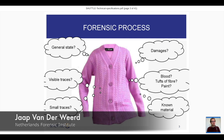When we get something in our lab, for example a vest or a garment, we think about many things: of course the micro traces, but also the general state — is it very worn, very old, or new? Are there any damages? Has somebody been stabbed? Is there blood on it? What is the known material — is it polyester, polyacrylic? So there are many things we think about, all based on the garment or item we receive in our lab.